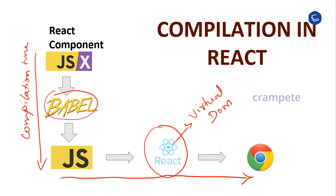JSX looks clean and readable, but it cannot be interpreted by the browser directly. The drawback of JSX is that it is not readable by the browser. So, before our code can be interpreted by the browser, it needs to be converted from JSX into pure React createElement calls — plain JavaScript calls. Luckily, there is an excellent tool for this: Babel, which translates JSX into these plain JavaScript createElement calls. The main advantage of JSX is that it provides a clean and readable way to express React elements in our code, and that's the benefit of JSX in React.